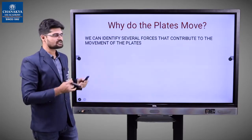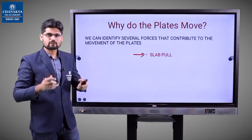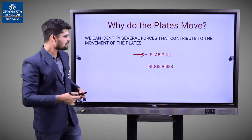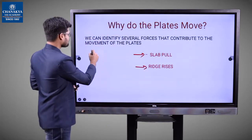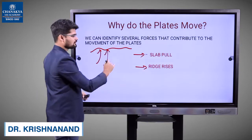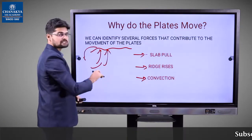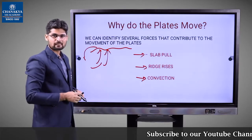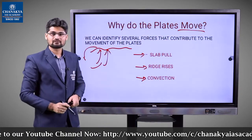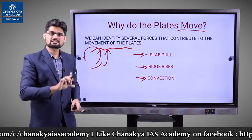Why do these plates move and in what ways? One type of movement is called slab pull — if the plate is like a slab, something is pulling it. Then we have ridge rises, where there is a movement of material. And then we have convection — moving from one section to another in a cyclic manner due to pressure or heat differences. These three — slab pull, ridge rising, and convection — happen beneath the surface of the earth.